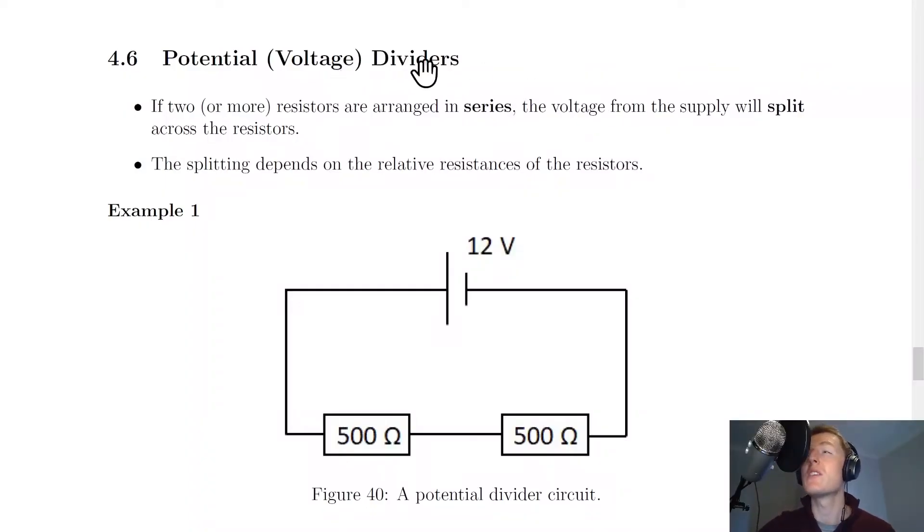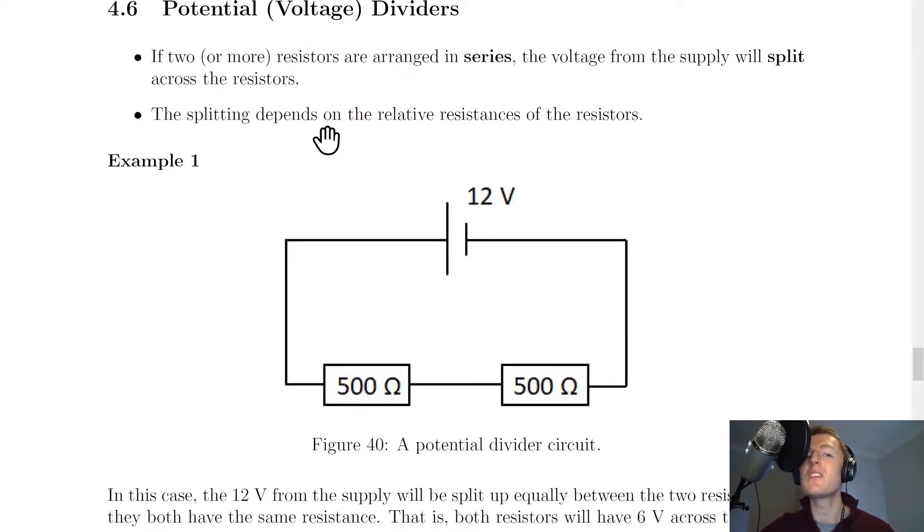Now a potential divider or voltage divider circuit is quite self-explanatory because what it involves is a voltage or a potential dividing across components in a circuit. So if two or more resistors are arranged in series, the voltage from the supply will split across the resistors. And this links in with our circuit rule for voltage in a series circuit, which said that the voltage across the components must add up to the supply voltage. The splitting depends on the relative resistances of the resistors.